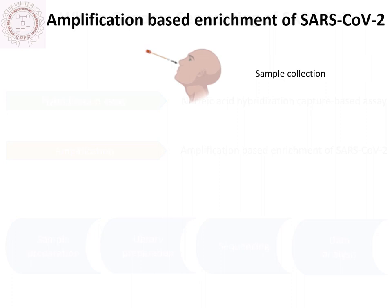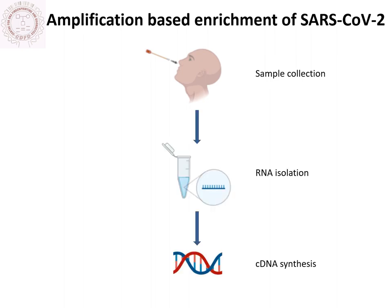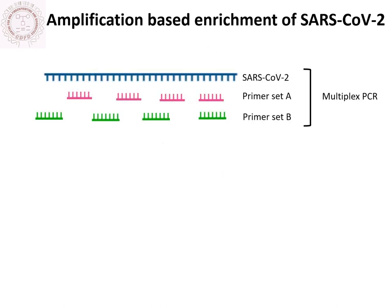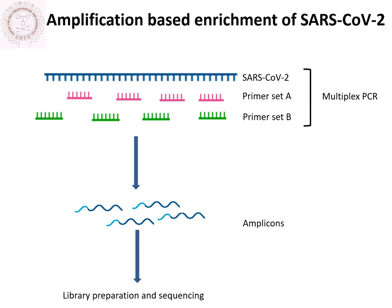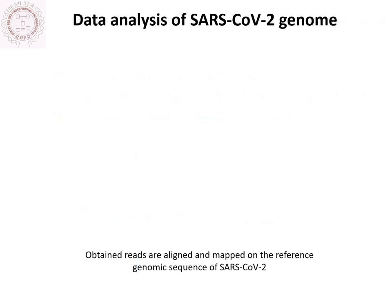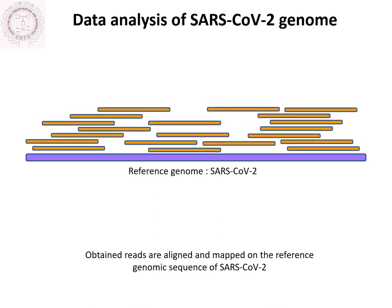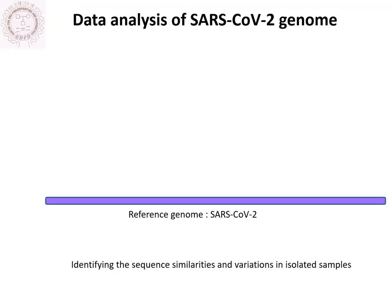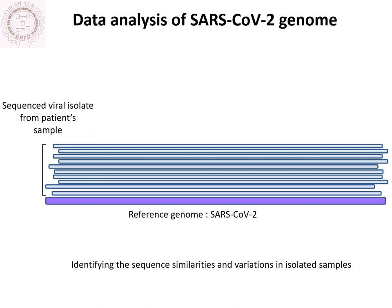Here we briefly discuss the amplification-based approach. Nasopharyngeal swabs from COVID-19 patients are processed for RNA isolation followed by cDNA synthesis. Subsequently, multiplex PCR is performed to produce pools of short amplicons. Samples are then processed for library preparation and sequenced on high-throughput platforms such as Illumina MiSeq and Oxford Nanopore. Obtained reads are aligned and mapped on the reference genomic sequence of SARS-CoV-2, and data analysis of different patient samples helps in identifying sequence similarities and variations.